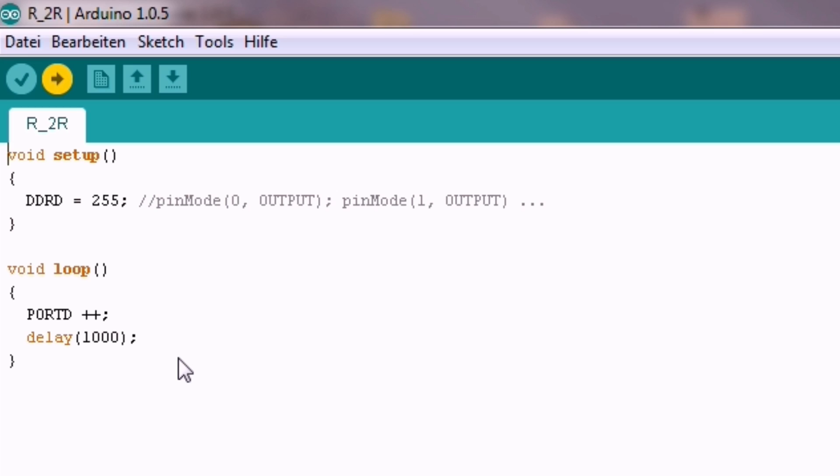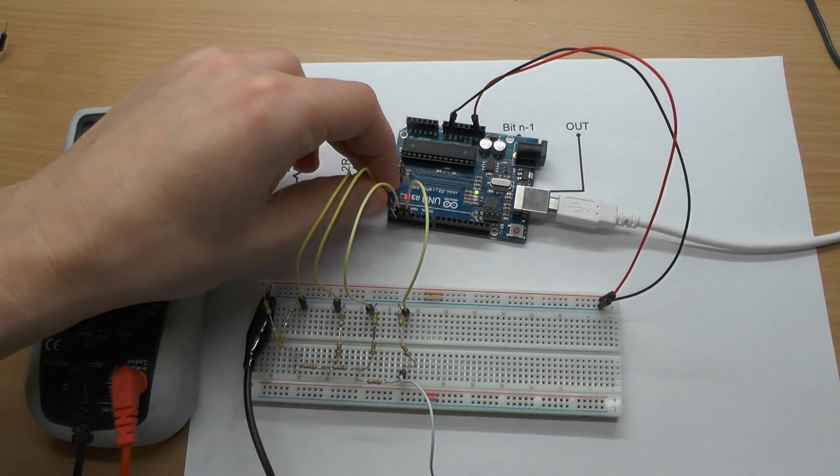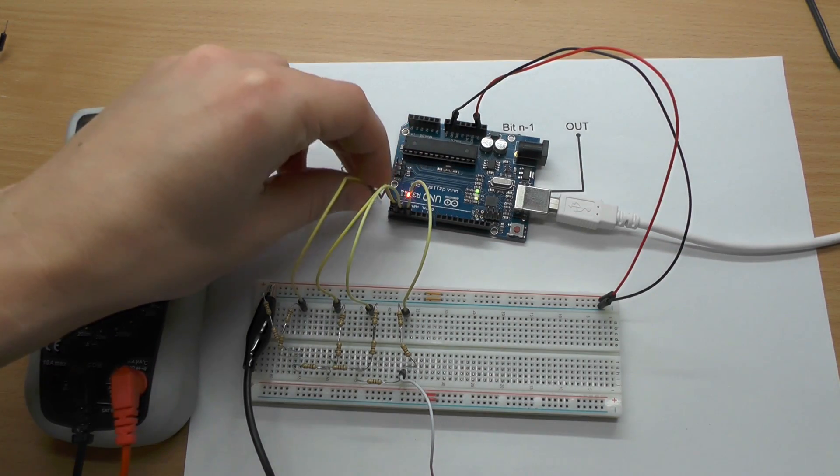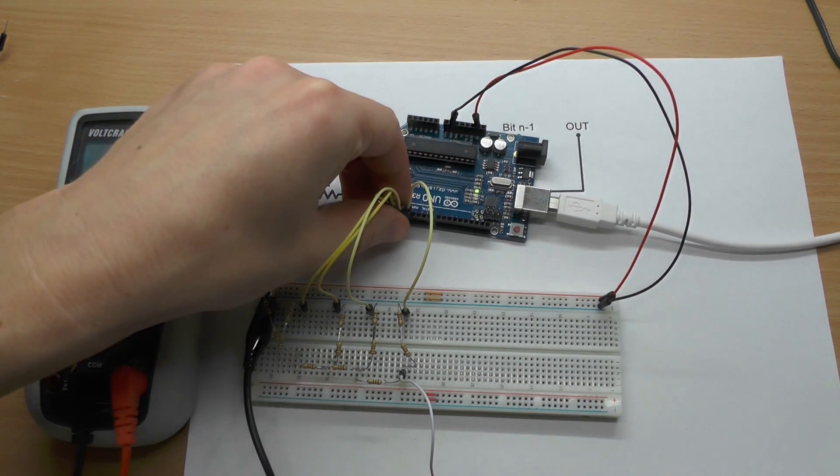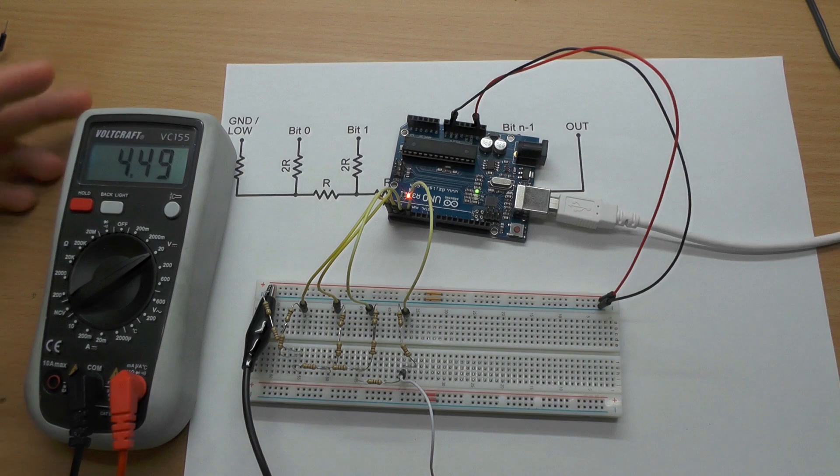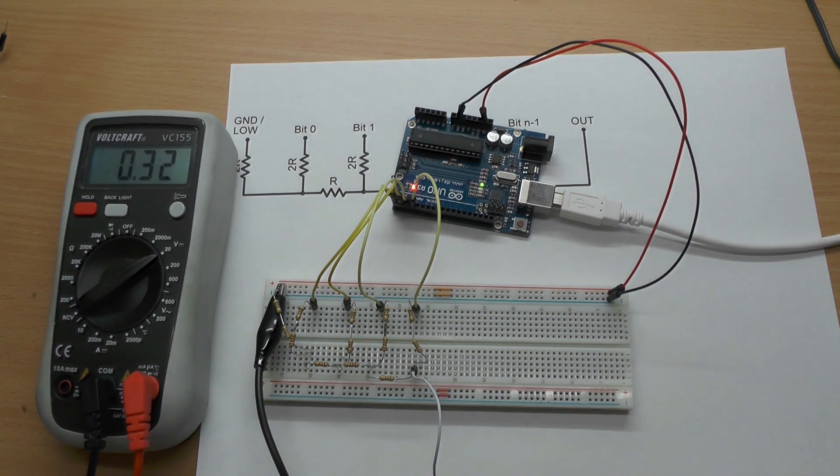One thing I forgot to mention. The first two bits have to be unconnected when you want to program it, otherwise it will time out. So let's reconnect them and take a look at our voltage meter. Nice, it cycles from 0 up to around 4.5 volts.